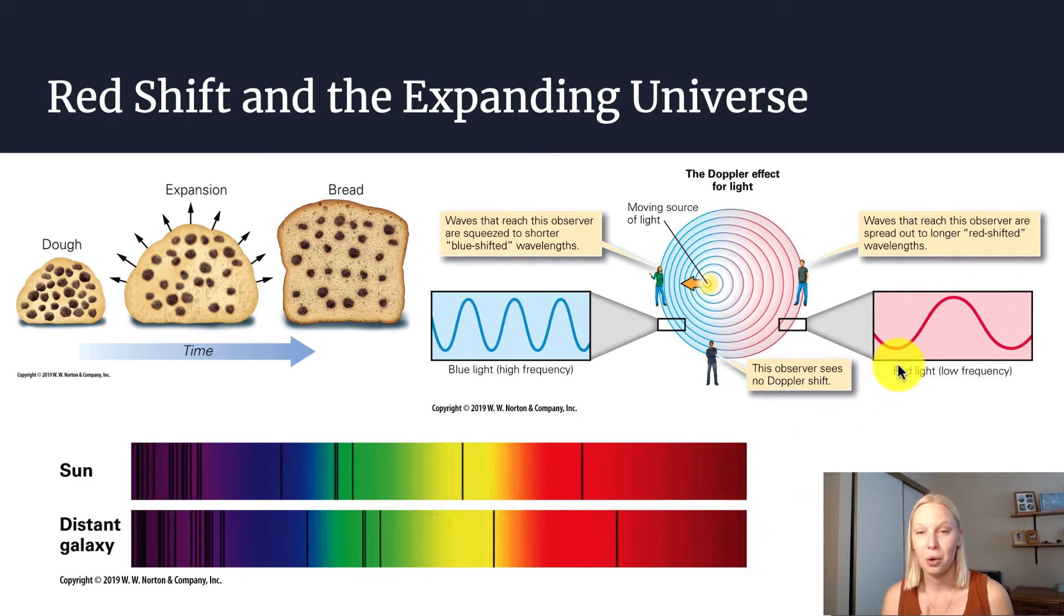If something is moving away from us, it tends to shift toward red. Now, somebody who is standing here, this observer right here, is looking at this moving light source. They're not going to observe any of this Doppler effect.